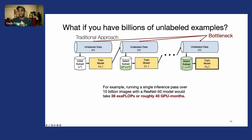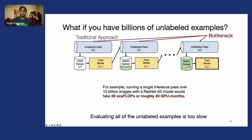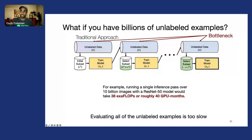For example, even a linear approach like simple uncertainty sampling—running a single inference pass over 10 billion images with a ResNet-50 model—would be about 40 exaflops or roughly 40 GPU months. Just evaluating all those unlabeled examples is effectively too slow and intractable for many use cases, especially when we want to do it multiple times in active learning.